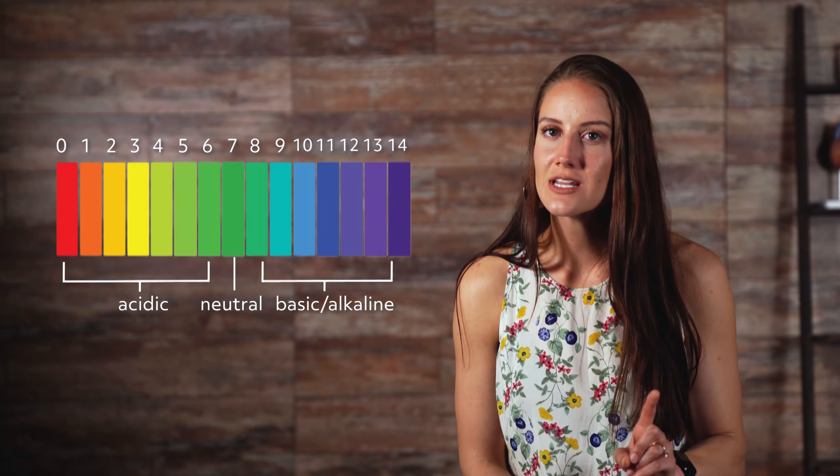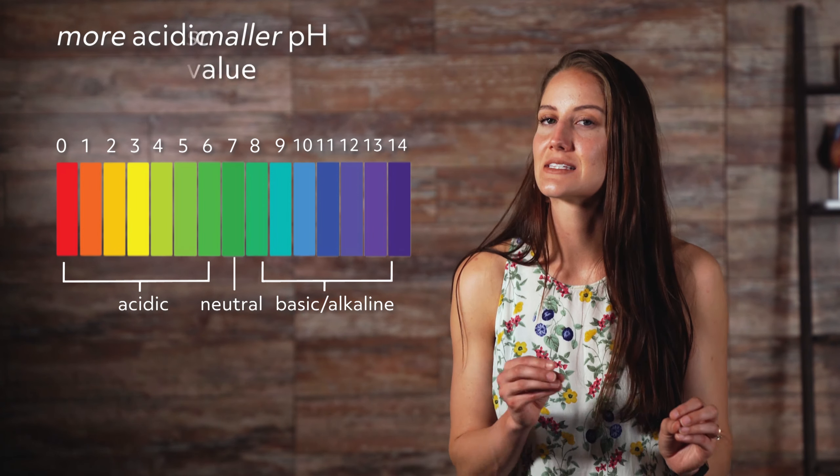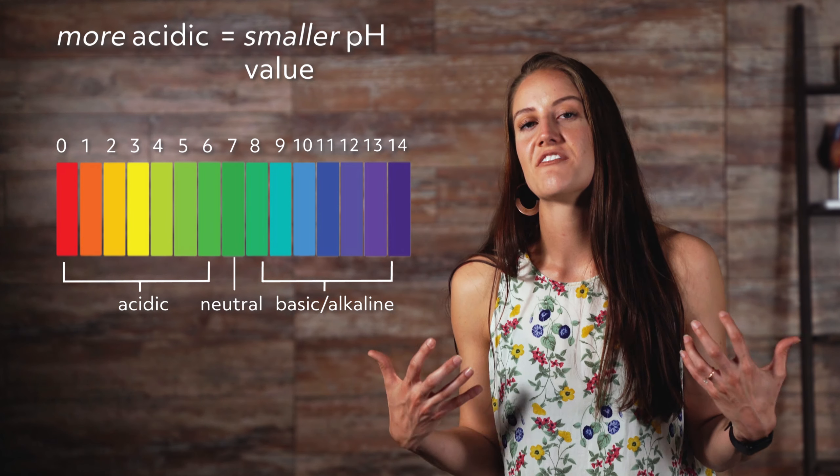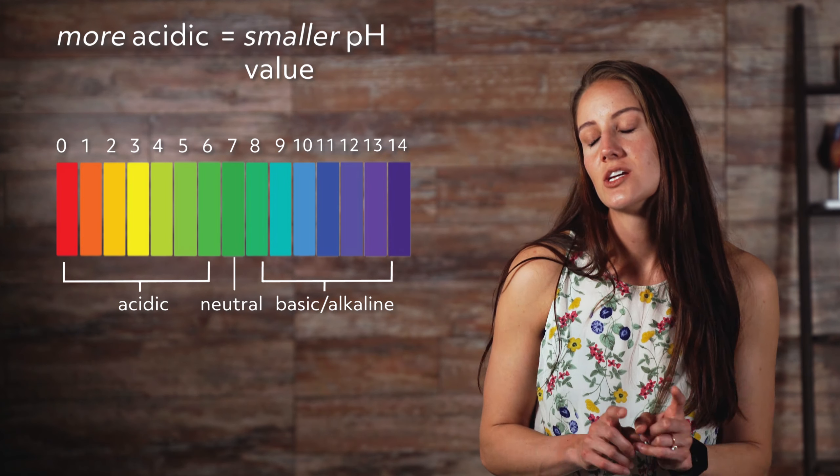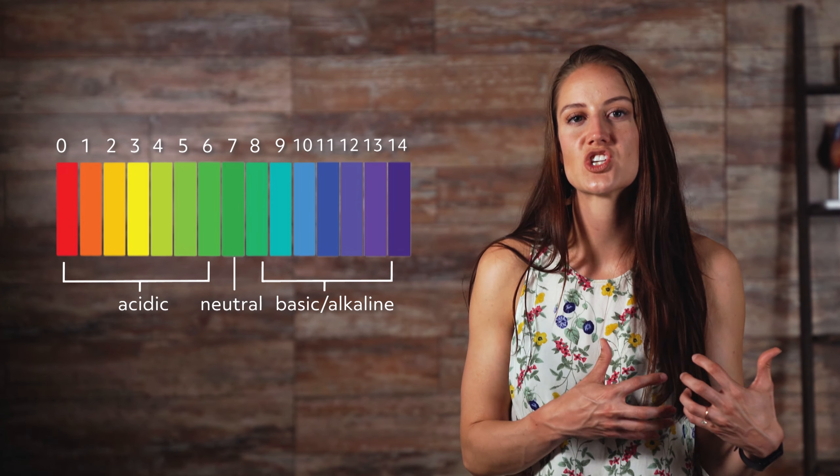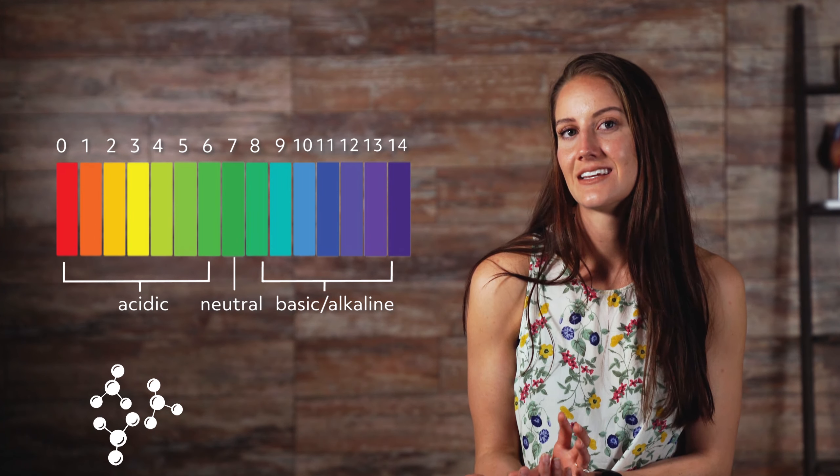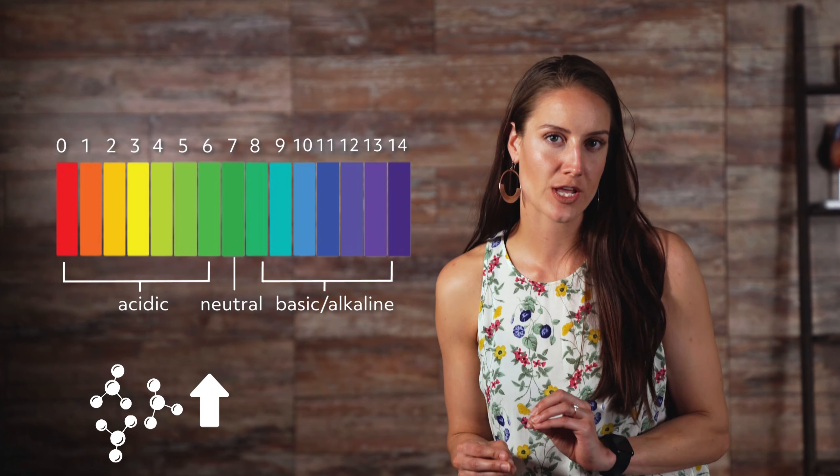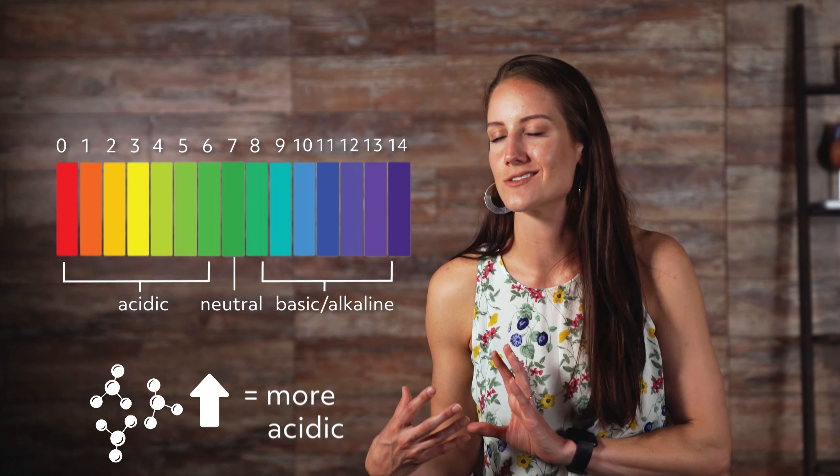A solution that is more acidic has a smaller pH value. That has to do with the definition of pH. Generally, the acidity of a solution is defined by the concentration of hydronium ions in it. The higher the concentration of hydronium ions, the more acidic the solution.